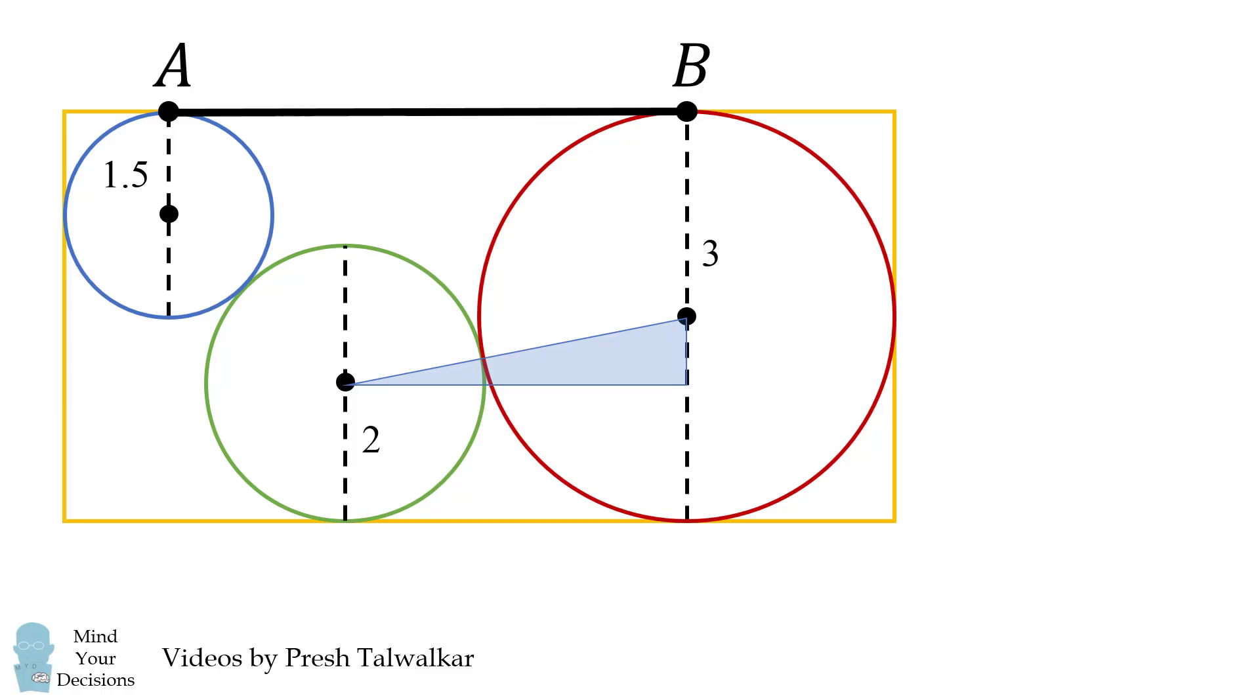...will be the difference of the radii of these two circles. This leg will be the difference of 3 and 2, so it will equal 1. The other thing is we know the hypotenuse. Because the two circles are tangent it will be the sum of the radii. So the hypotenuse will be equal to 2 plus 3 which equals 5.